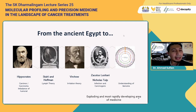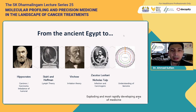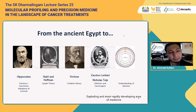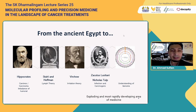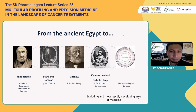Throughout history, physicians and philosophers have been trying to find the cause of cancer. Hippocrates came with the humoral theory, thinking that an imbalance between four types of fluids in the body led to cancer. Stoll and Hoffman thought cancer came from the lymphatic system or lymph fluid, a finding accentuated by John Hunter, the Scottish surgeon. Rudolf Virchow, the father of cellular pathology, thought cancer came from irritation between cells.